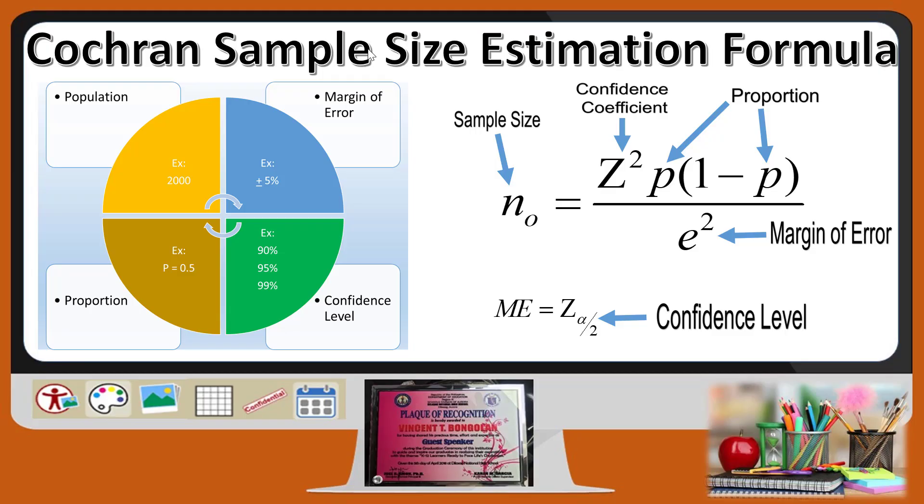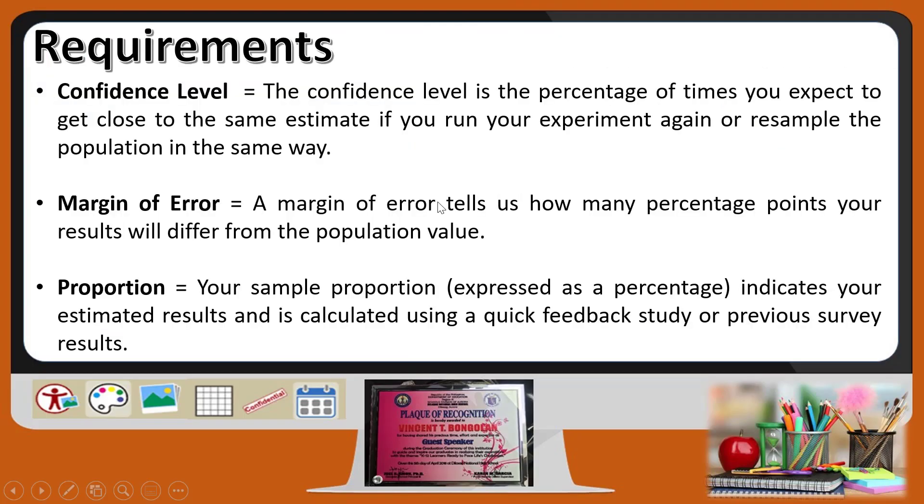And you will end up by asking yourself, what is the confidence coefficient? Or, what is the Z value? What is the Z value if the given data that we have is the confidence level? All we need to do is to convert or to get the corresponding Z score of a confidence level. We need to calculate first the Z score of the corresponding confidence level. But what is confidence level?